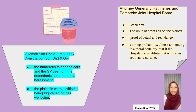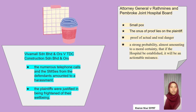Furthermore, an action against the building of a smallpox hospital required proof of actual and real danger, almost amounting to moral certainty, and that if the hospital were established, it would be an actionable nuisance. That is all from the second speaker.